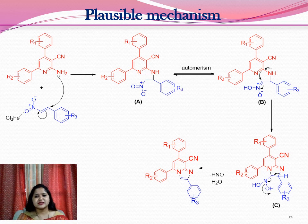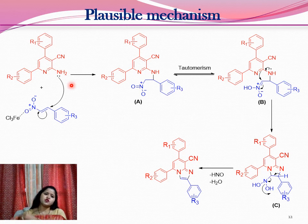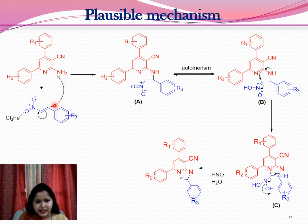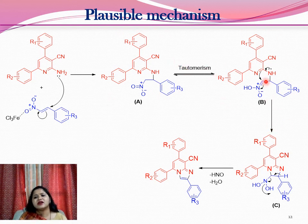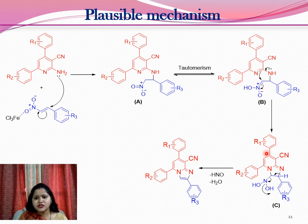This is the plausible mechanism for this reaction. The exo-nitrogen attacks on nitrostyrene to give intermediate A, which on tautomerism gives intermediate B. Cyclization then occurs via the attack of endo-nitrogen, followed by elimination of HNO2 and water to give the desired product.